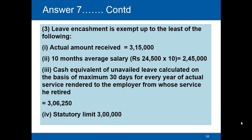Now leave encashment is exempt up to the least of the following. First, actual amount received is rupees 3,15,000. Second, ten months' average salary: 24,500 into 10 gives rupees 2,45,000. Third, the cash equivalent of unavailed leave calculated on the basis of maximum 30 days for every year of actual service rendered comes to rupees 3,06,250, and we will discuss how this figure is arrived at in the coming slide. Fourth, the statutory limit is rupees 3 lakhs. The least is rupees 2,45,000.